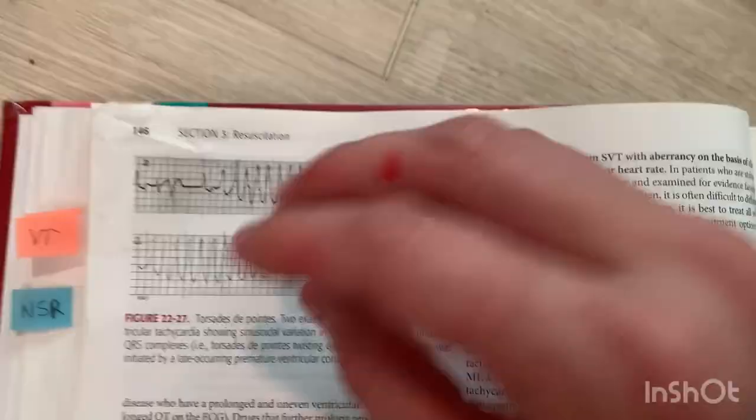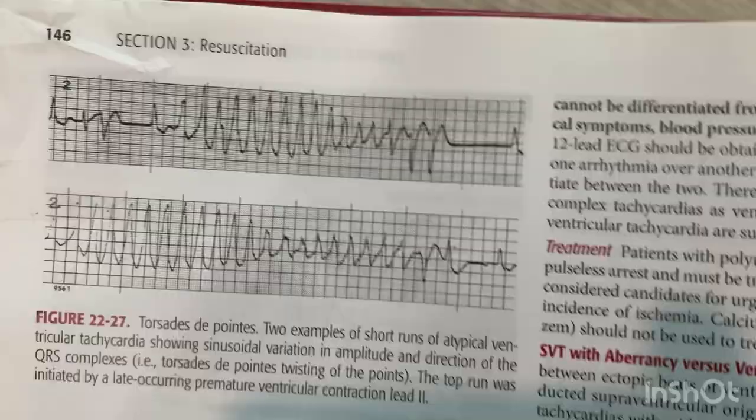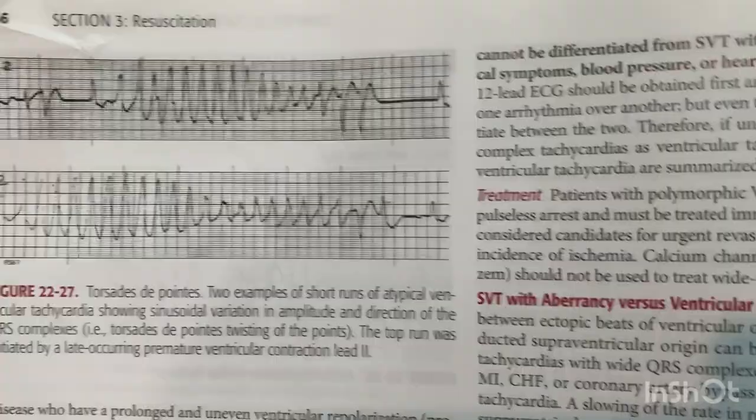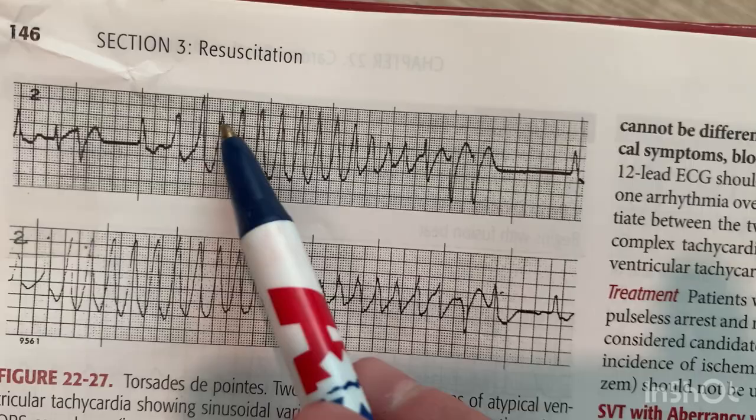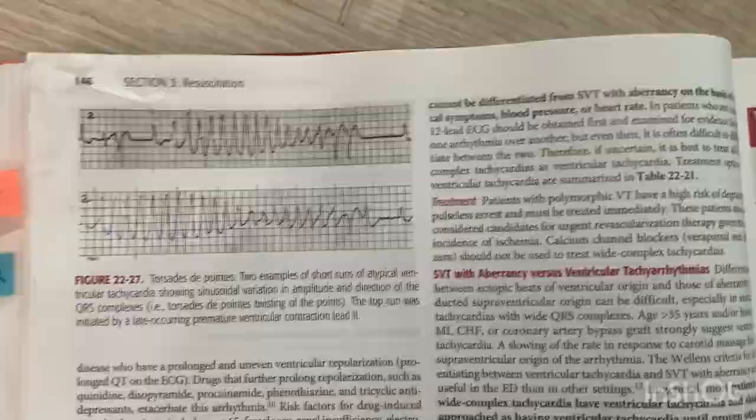Using the box method, we can look at this and say from here to here, that's roughly 300 — a little less than 300. That's how fast this ventricular tachycardia is.